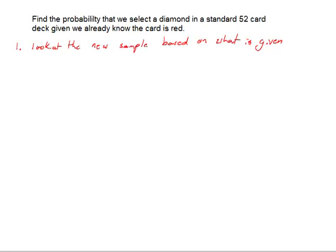Okay, so in this situation we already know that the card is red. So when I look at a 52 card deck, the way it works is that 13 cards are diamonds, 13 are hearts, and those are our red suits. And then we also have 13 clubs which is black and 13 spades which is black. So I have 26 red cards and 26 black.